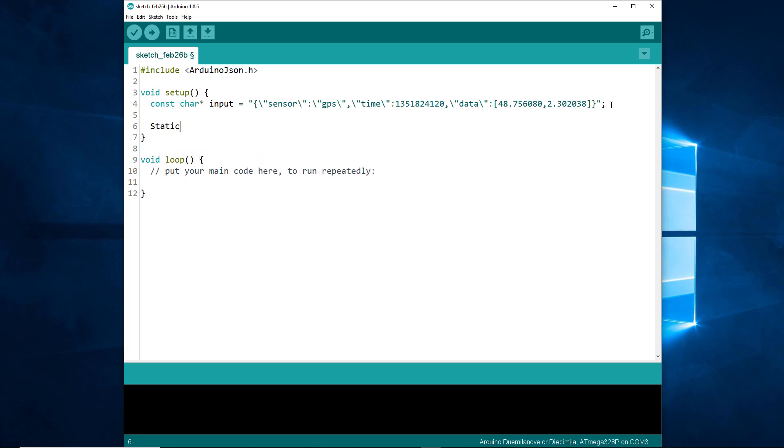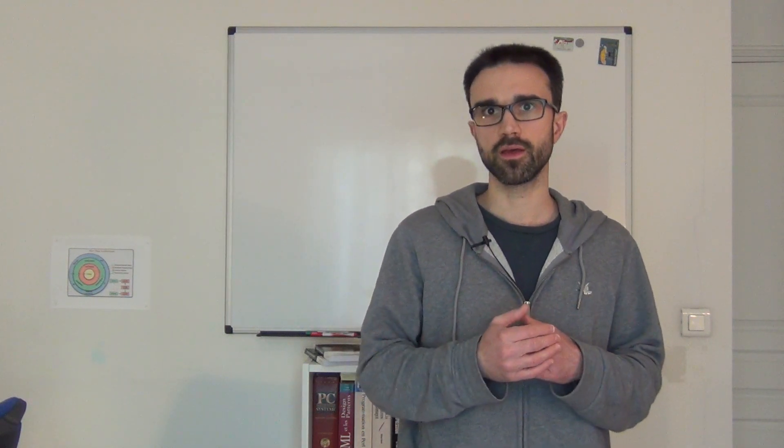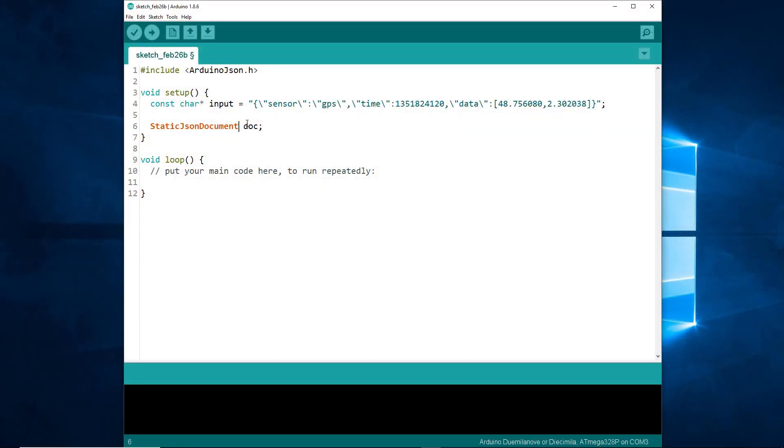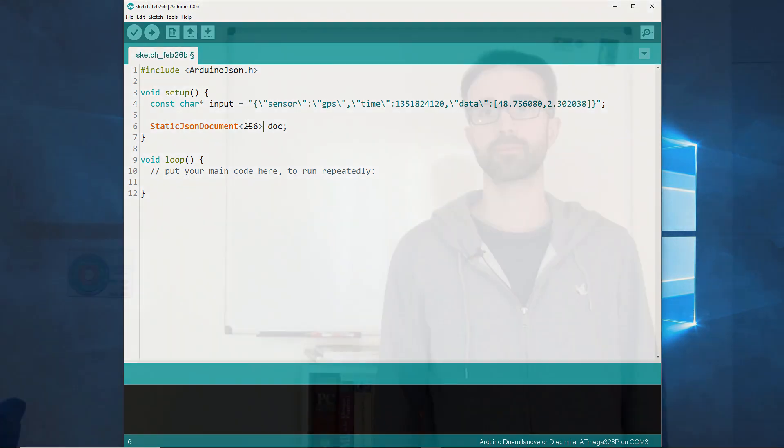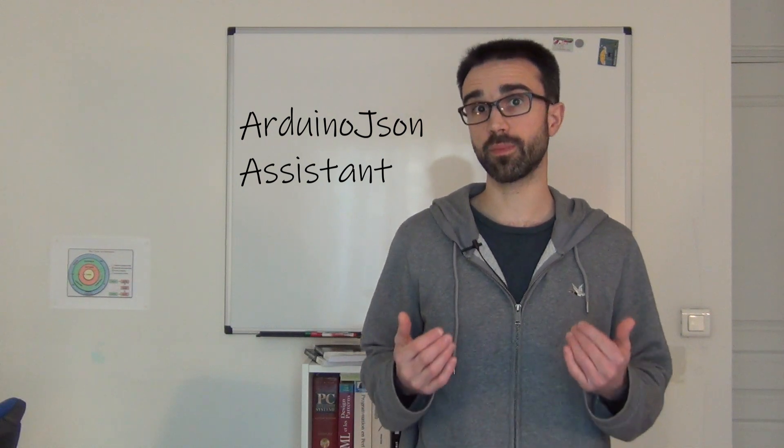Now, I want to get all your attention, because it's the only tricky part. To put our memory pool in the stack, the compiler needs to know its size. Static JSON document has a template parameter that allows us to specify the capacity of the memory pool. Here, we'll use 256 bytes. I understand your confusion. Where does this number come from? To be honest, I just picked a capacity that seems to be big enough for this example. However, in a real project, you will use the Arduino JSON assistant to compute the capacity for you.